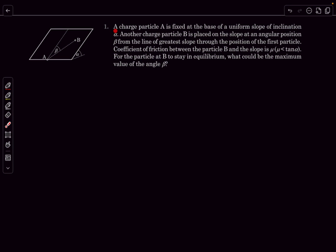Hello everyone, welcome back. Today's problem is from electrostatics. We have a charged particle A that is fixed at the base of a uniform slope of inclination alpha. Basically, we have a plane that is inclined at an angle alpha to the ground, and a point charge is fixed at this point A.